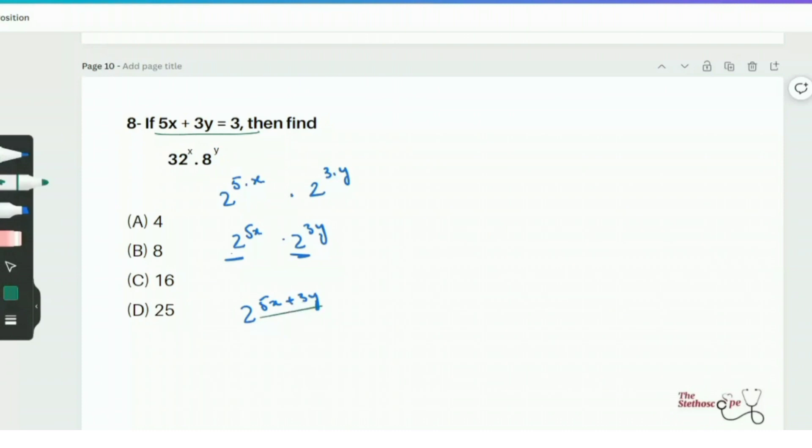And as given in the question, we have 5x plus 3y equals 3. So it's 2 to the power 3 which means it's 8. So the correct answer option is option B.